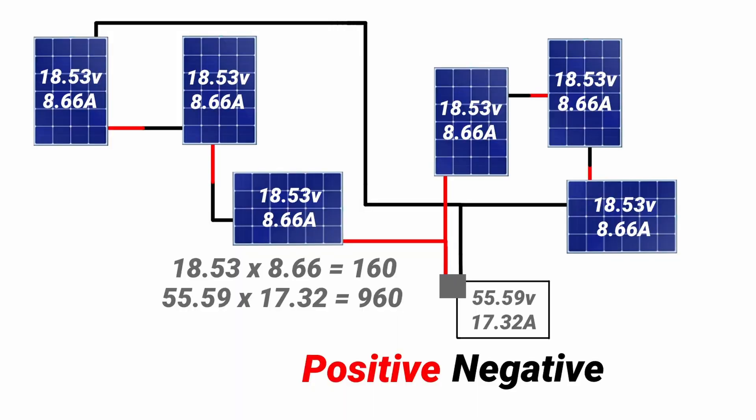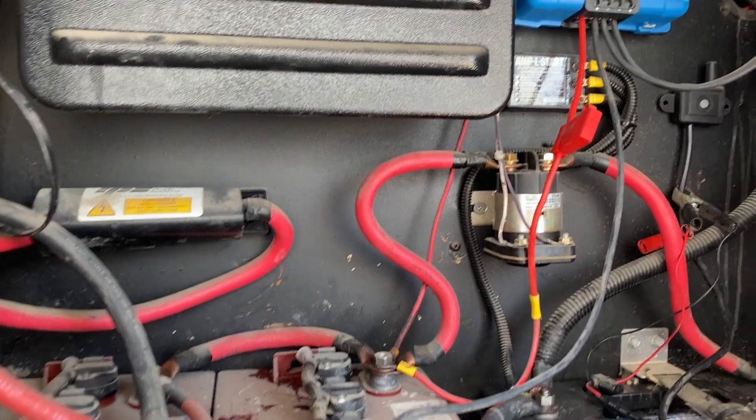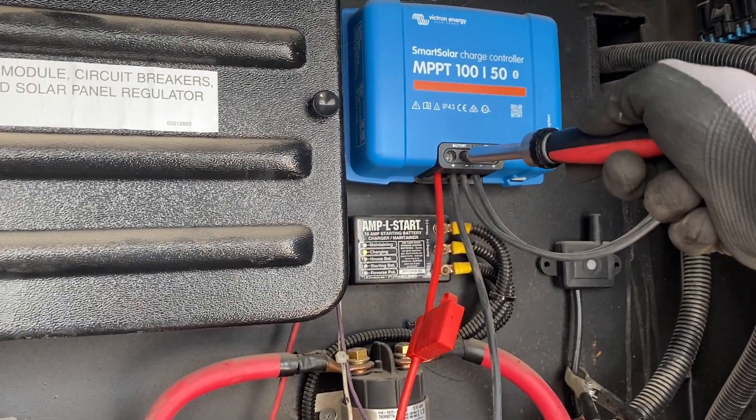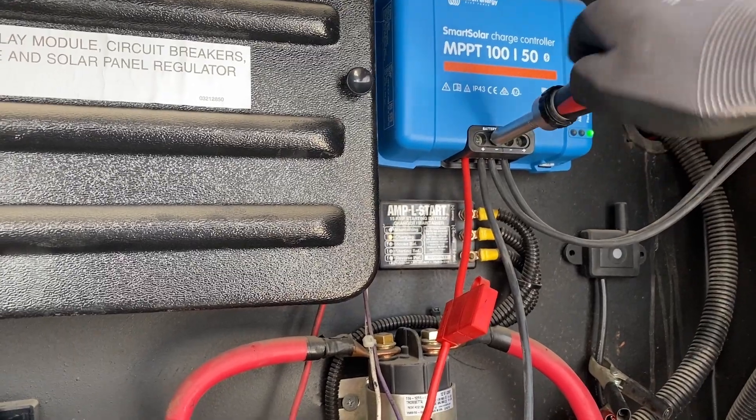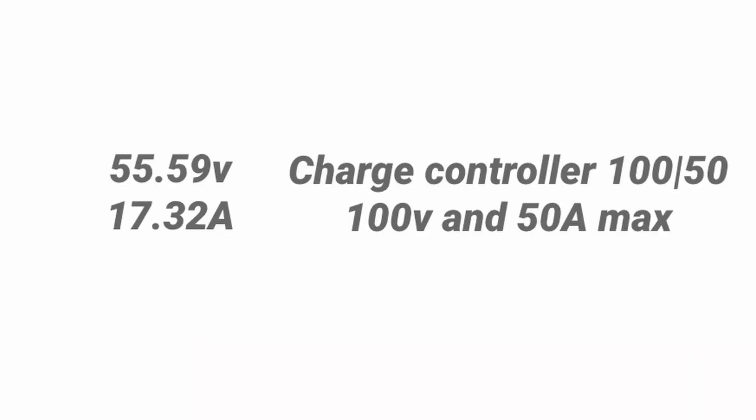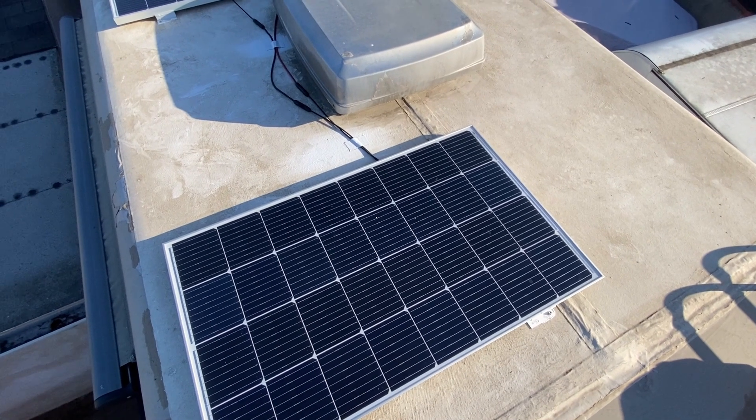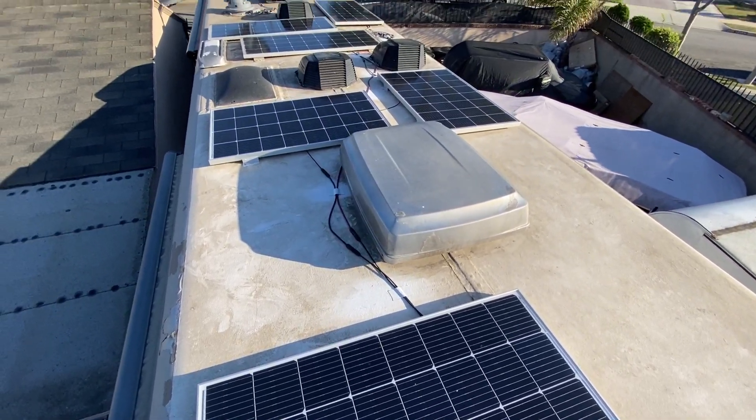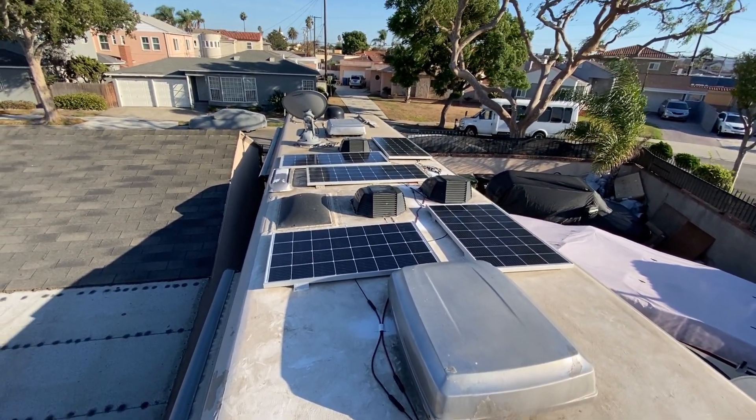The final voltage is 55.59 volts and 17.32 amps. My client's charge controller is a Victron 100 by 50 which means it can take up to 100 volts and 50 amps of solar input. As you can see we meet that threshold. But if we were to put all the panels in just series or just parallel we would be past those numbers.